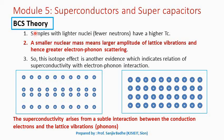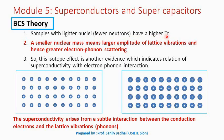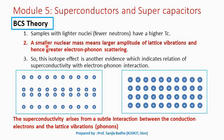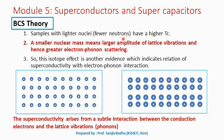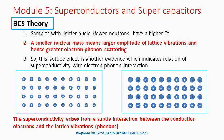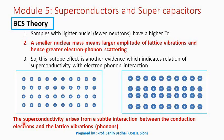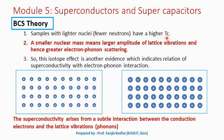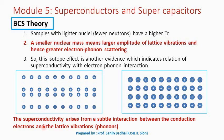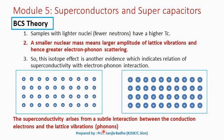Bardeen, Cooper, and Schrieffer observed that samples having smaller nuclear mass — that means lighter nuclei — have higher critical temperature, meaning it is easier to transform isotopes with smaller nuclear mass into the superconducting state. So the isotope effect is another evidence indicating the relation of superconductivity with electron-phonon interaction. From these two important observations, they arrived at the statement that superconductivity arises from a subtle interaction between conduction electrons and lattice vibrations — that is, phonons.